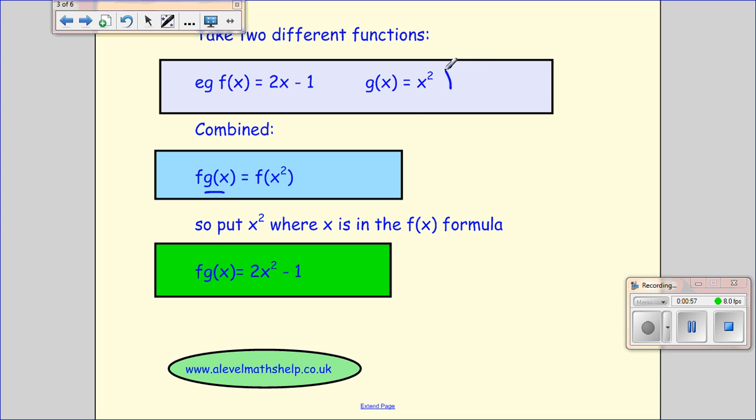Now g of x is x squared and that becomes our input. The answer to that becomes our input for f. Now whatever's in this little bracket here is your input for your f function.